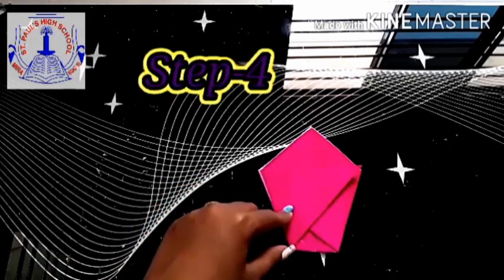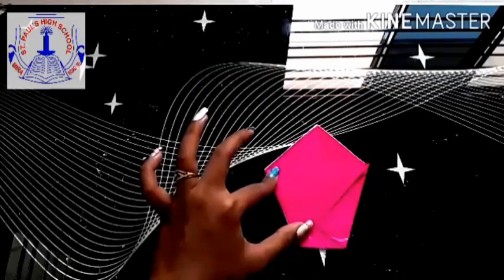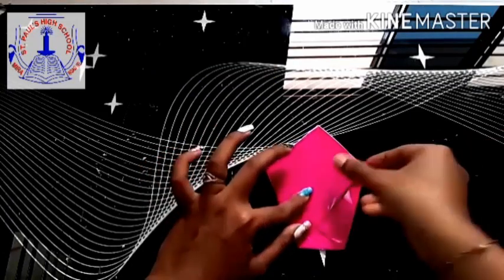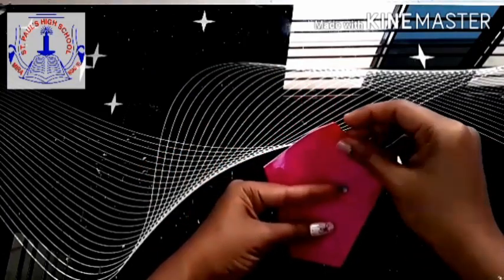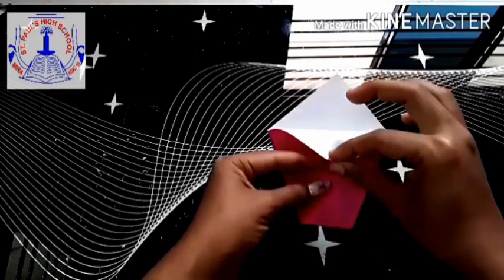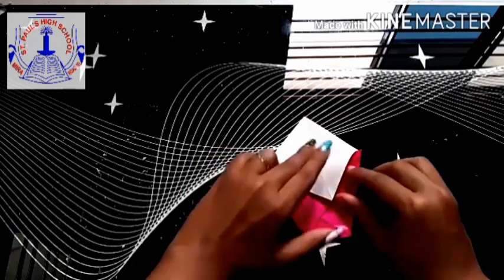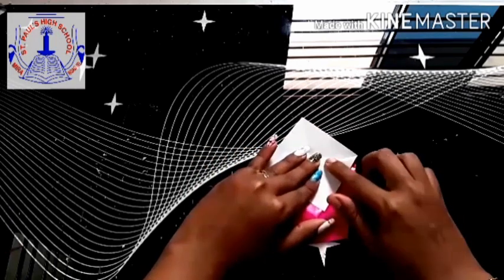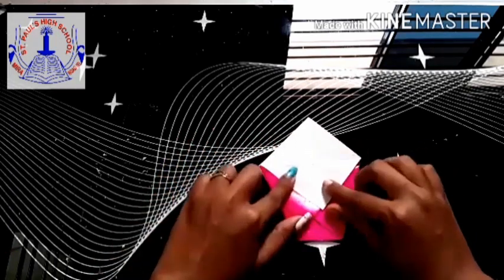Step 4. After that. On top. You will get 2 flaps. One flap. You are going to fold it towards your front side. See this way. Crease it well.